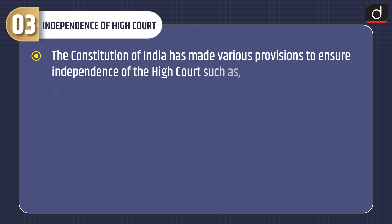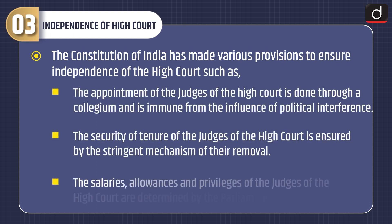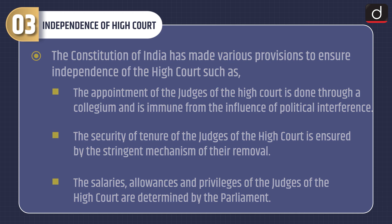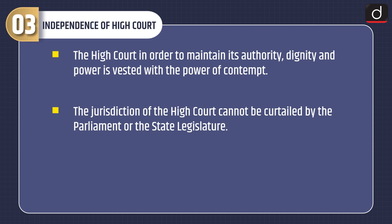The Constitution of India has made various provisions to ensure independence of the High Court, such as: the appointment of judges is done through a collegium and is immune from political interference; the security of tenure is ensured by a stringent mechanism of removal; salaries, allowances and privileges are determined by Parliament; the High Court is vested with the power of contempt to maintain its authority; and the jurisdiction of the High Court cannot be curtailed by Parliament or the State Legislature.